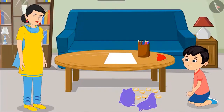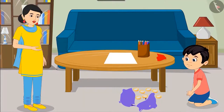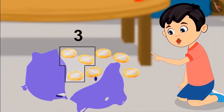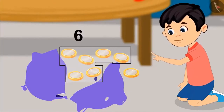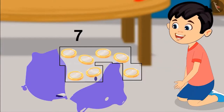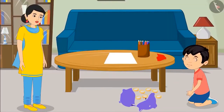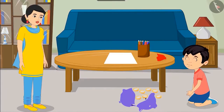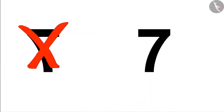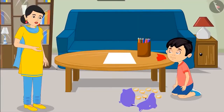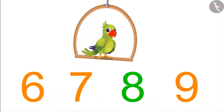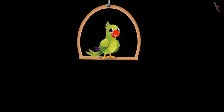His mother says he did not count the coins one by one — these are not nine coins. Count them again one by one. Chotu counts: one, two, three, four, five, six, and seven — these are seven coins. Correct! Now write the number on paper. His mother notices Chotu has written 7 in reverse. It is written correctly like this — do you understand? Yes, mom. Can you write numbers from 6 to 9 properly? Be careful not to write any number in reverse like Chotu.